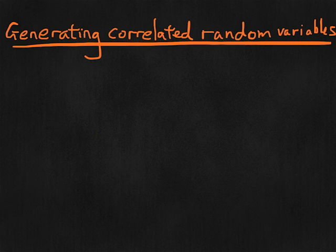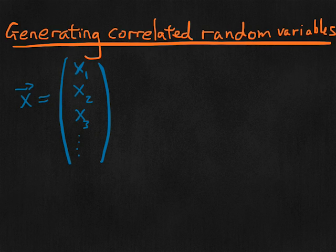And by that, what I mean is this. Suppose we have a vector x that consists of a whole bunch of different components: x1, x2, x3, and so on. And that all these components are random numbers.